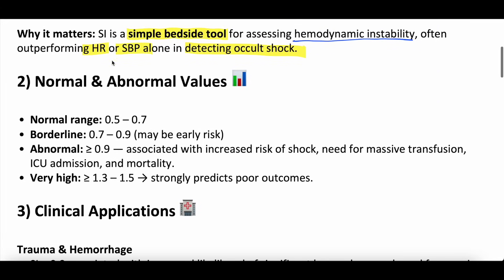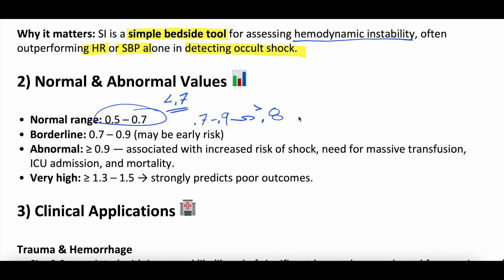A normal shock index for someone walking around is somewhere around 0.5 to 0.7. Less than 0.7 is considered normal. Borderline is 0.7 to 0.9 — maybe early risk. A lot of people quote 0.8 as the magic number: anything greater than 0.8 is a positive or abnormal shock index. There's kind of a 0.7 to 0.9 range that is gray and unclear — there might be some impending risk.